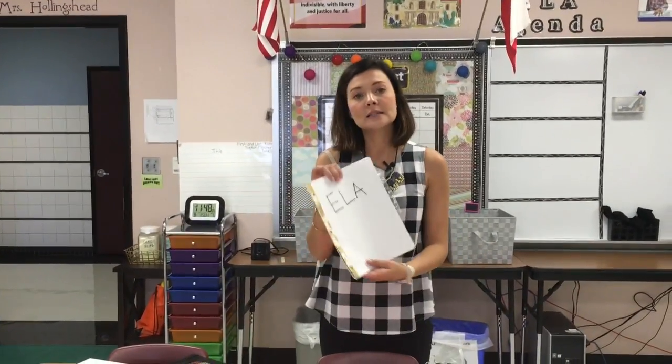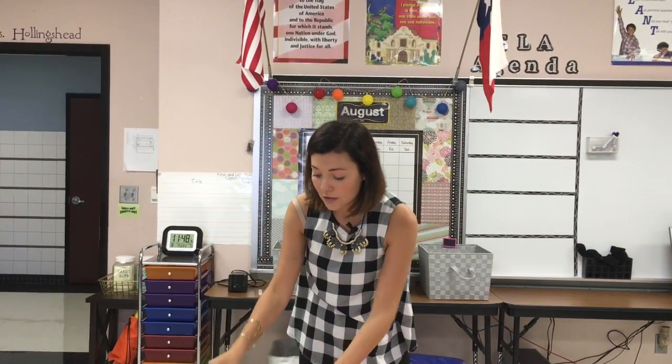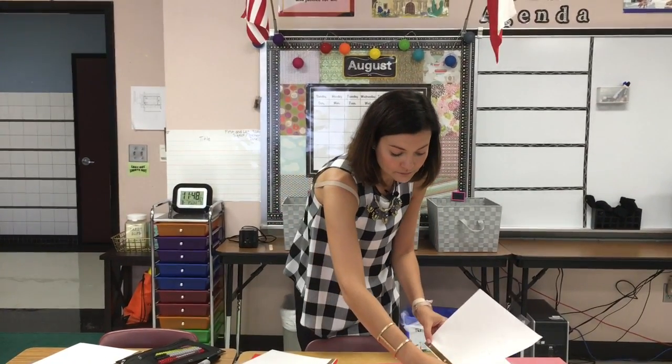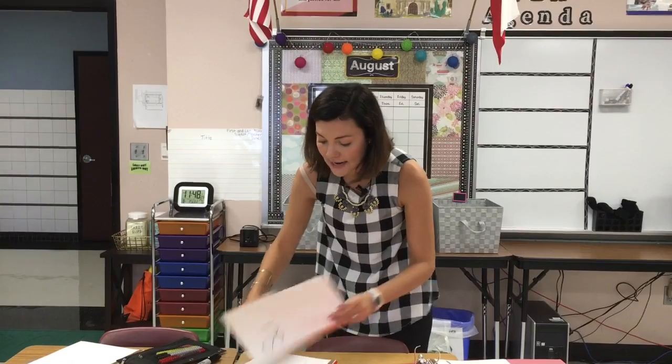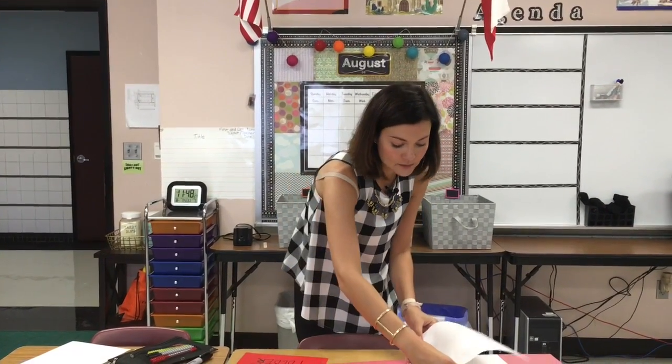Next, we're going to start organizing the binder by what your student's schedule is. So let's say I have a student in my class who goes to ELA, then math, then science and social studies — that's the order we'll use. First we have ELA, then math, then science, then social studies. Some teachers may choose to include subdividers within the original dividers, so that's why we have extra dividers just in case.